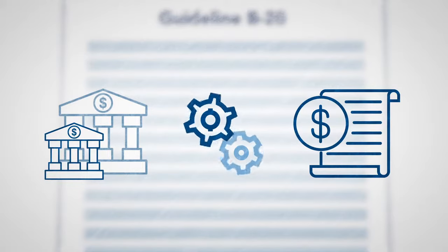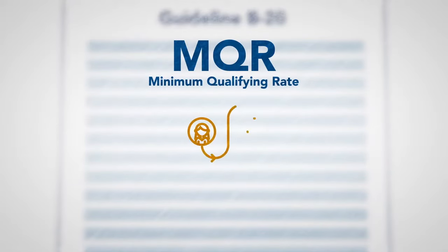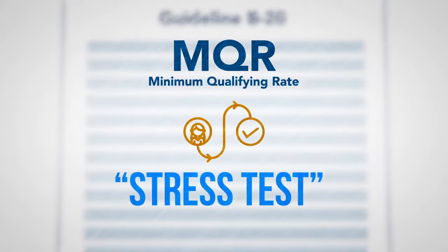One of the better-known elements of B20 is the minimum qualifying rate or MQR. This is sometimes referred to as the stress test.